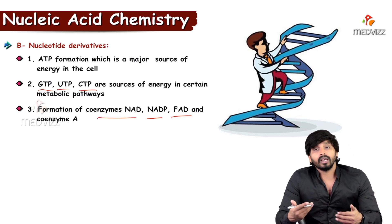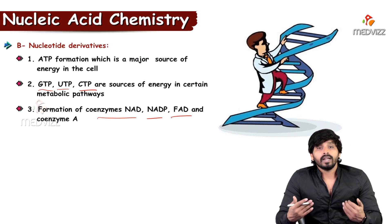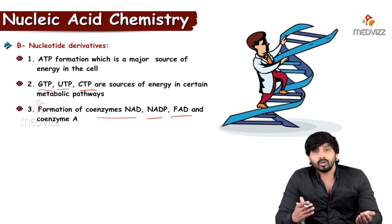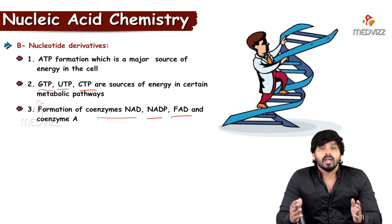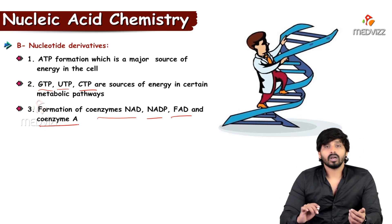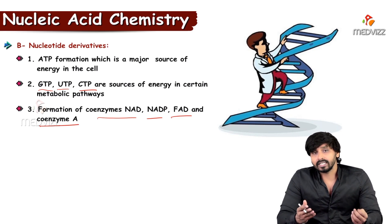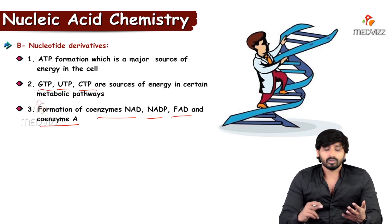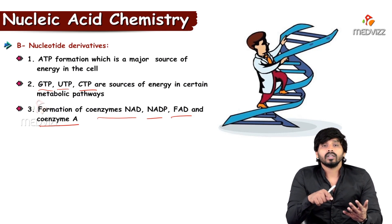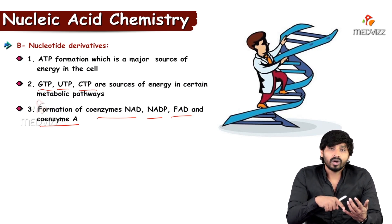Apart from niacin, we have riboflavin — FAD, flavin adenine dinucleotide. From the name itself you can see it contains a nucleotide. Adding a phosphate group to NAD converts it to NADP. Coenzyme A involves pantothenic acid, vitamin B5. So nucleotides are required for synthesis of coenzymes related to B3, B2, and B5.